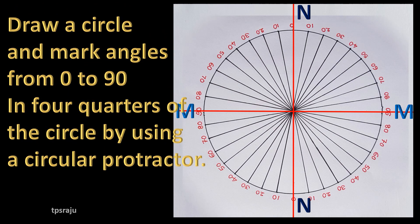Draw a circle and mark angles from 0 degrees to 90 degrees in four quarters of the circle by using a circular protractor.